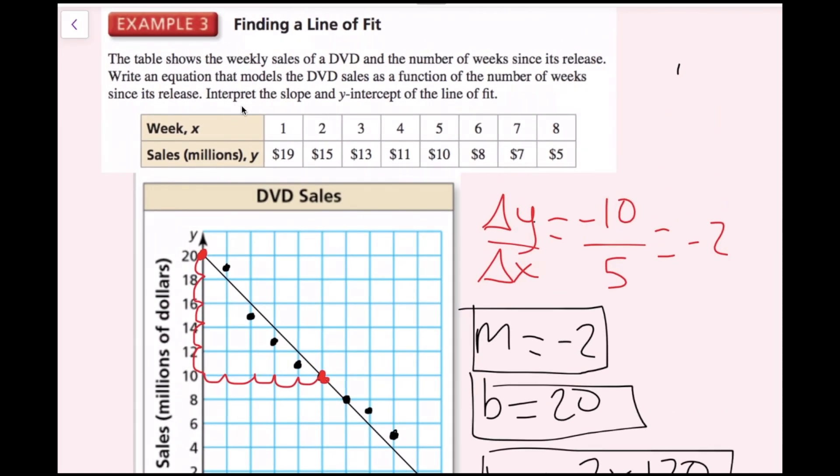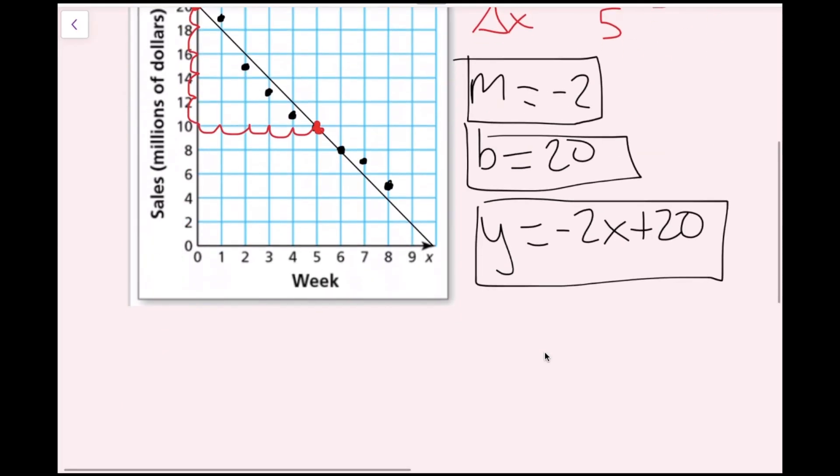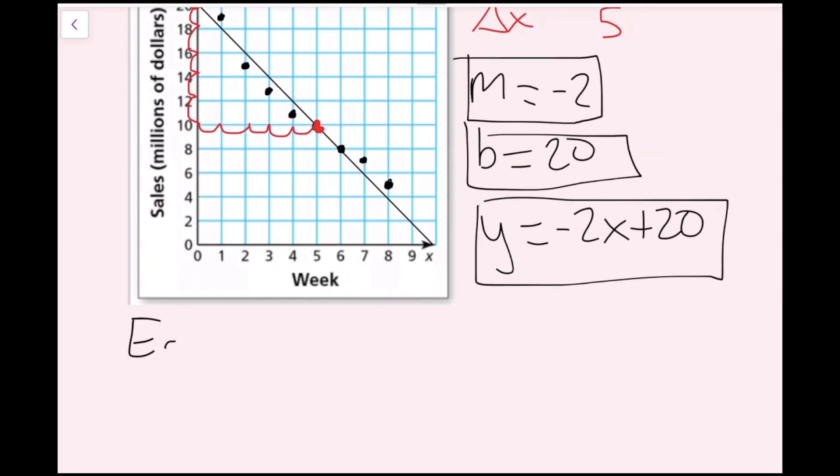The next thing we need to do is interpret the slope and the y-intercept of the line of fit. The slope is the rate of change in this case. Basically, it is how the sales are changing per week. It's negative 2 and we have millions of dollars. So each week on our line of best fit, the amount of DVD sales is decreasing by $2 million. Each week, the sales decrease by $2 million.